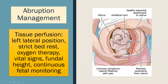Abruption management includes optimizing tissue perfusion: 10 liters of oxygen via face mask, left lateral positioning for best fetal oxygen flow, strict bed rest, close vital signs monitoring, and watching the fundal height — if it's rising, we're concerned about concealed bleeding. Continuous fetal monitoring is required.